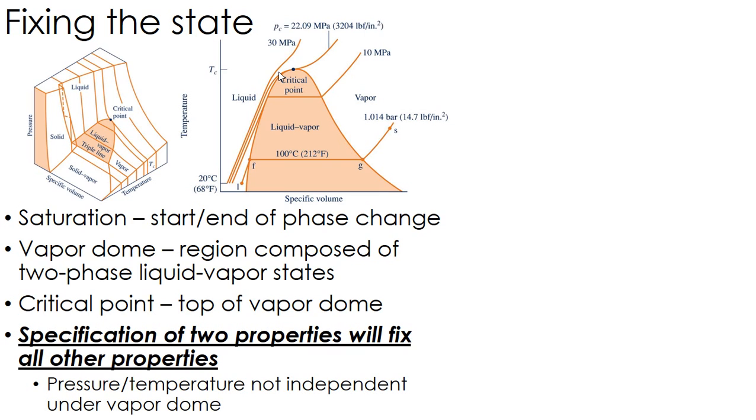Fixing the state, essentially, if I know any two properties of the state, I can find any other property of the state. So if I know volume and pressure, I immediately know temperature. Now there's one exception, and that's under the vapor dome. Pressure and temperature are not independent of one another. So if I know I'm under that vapor dome and I know the pressure, I automatically know the temperature, because they're completely dependent on one another. But other than that, if I know any two properties either outside the vapor dome or any two properties other than pressure and temperature under the vapor dome, I can fix all other properties of that state.